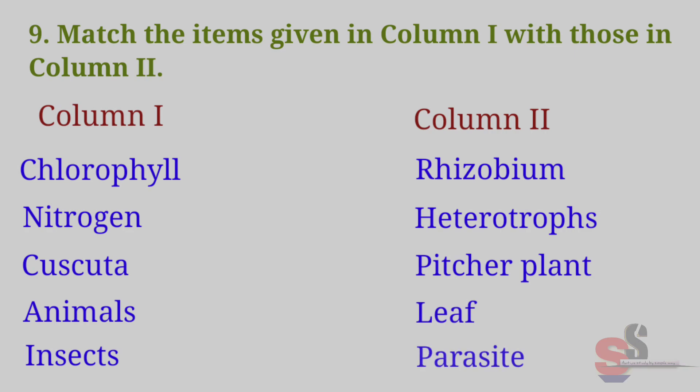Now we will match the pairs: chlorophyll—leaf, nitrogen—Rhizobium, Cuscuta—parasite, animals—heterotrophs, insects—pitcher plant.